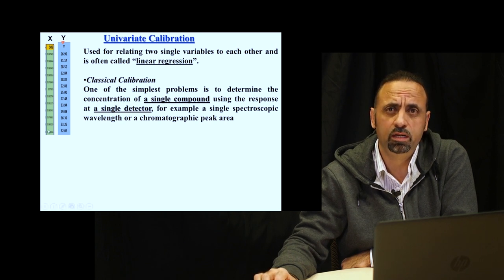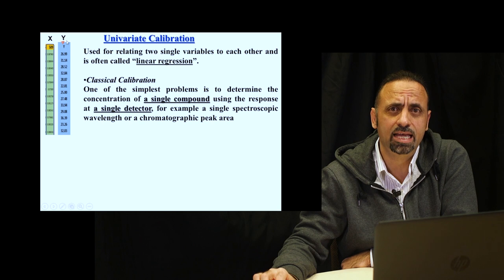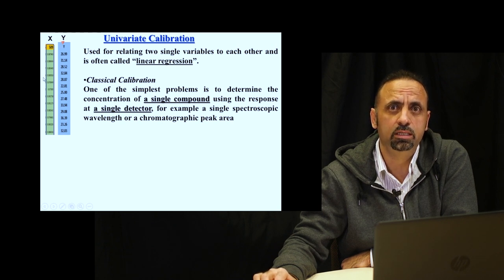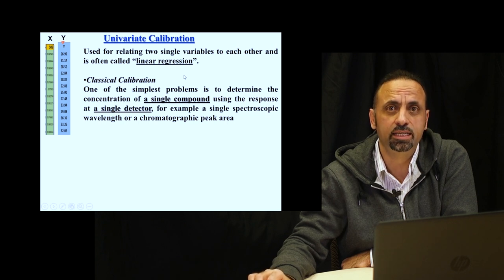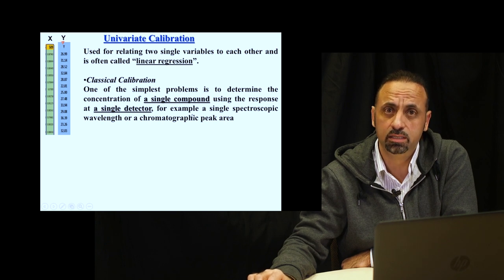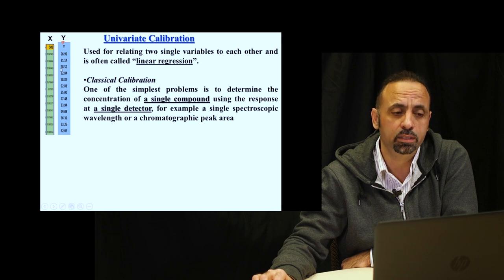But if you have 100 samples of transmittance or reflectance, at every sample you should have a value of concentration. So we need to use spectral information to predict all of these chemical compositions or concentrations. We need to use classical calibration — univariate analysis using a single compound to predict a single compound.